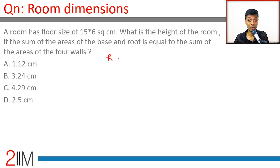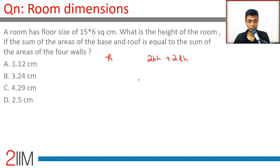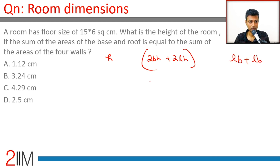All numbers are in centimeters — I would have expected them to be in some other unit. The height is h, so the four walls will add up to 2bh plus 2lh. The sum of the areas of the base and roof equals the sum of the areas of the four walls. The four walls area is 2bh + 2lh, and the base and roof area is lb plus lb. Length is 15, width is 6.